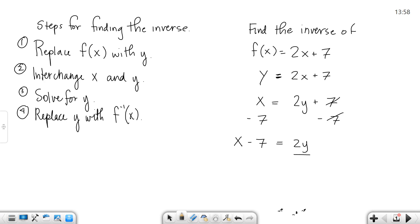To get y by itself, I'm going to divide by 2. So x minus 7 over 2 would equal y.